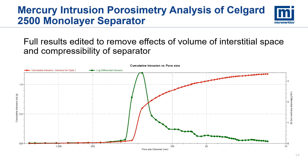The remaining pore volume distribution for this monolayer separator is shown in this graph. The software of the AutoPore includes features that allow for the easy removal of interstitial and compression effects, leaving for this separator a monomodal pore distribution skewed towards smaller pore opening sizes with some small shoulders on that small-diameter side of the primary mode.